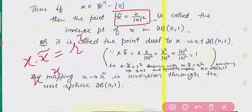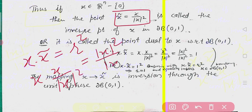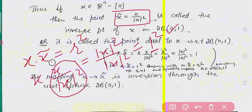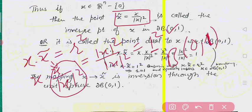We verify: x · x̃ = x · (x/|x|²) = |x|²/|x|² = 1 = 1². So this equals the radius squared with radius equal to 1. That means x̃ belongs to the ball with radius 1, confirming that x̃ is the inverse point of x through the unit sphere.